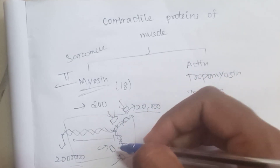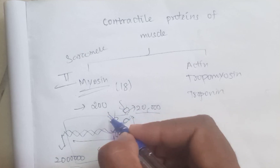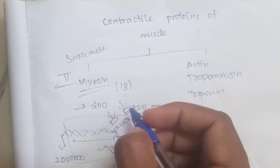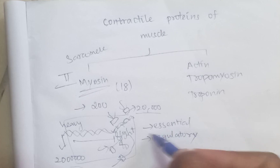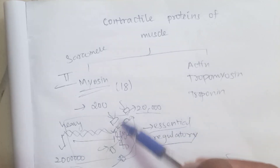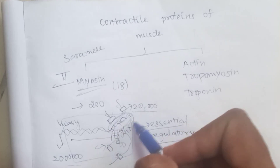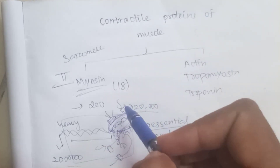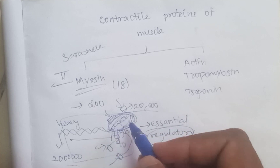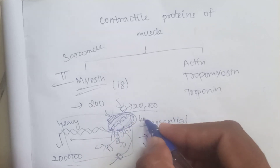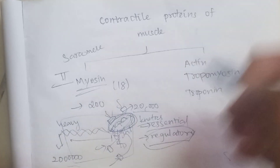There are two types of light chains: one is the essential light chain and the other is the regulatory light chain. The essential light chain stabilizes the myosin head. If you look at the regulatory light chain, it regulates head kinetics - that is, it controls motion.